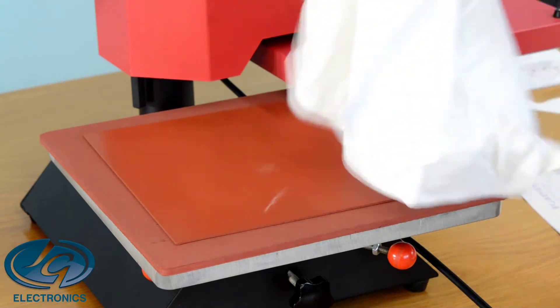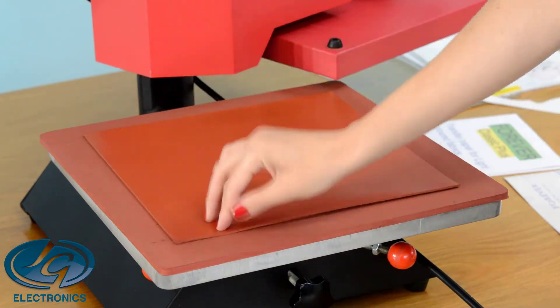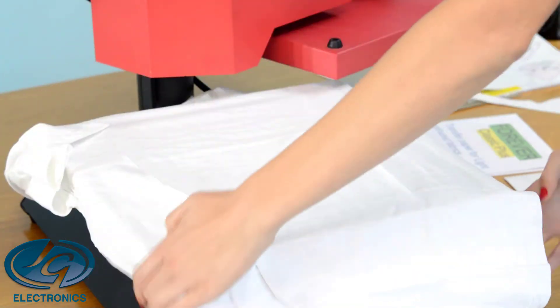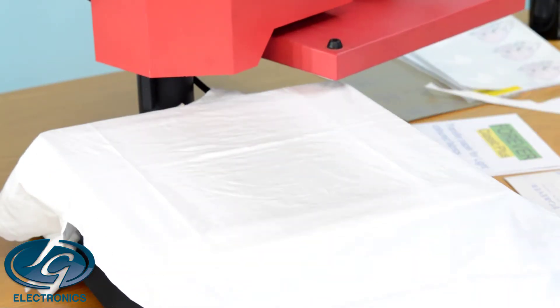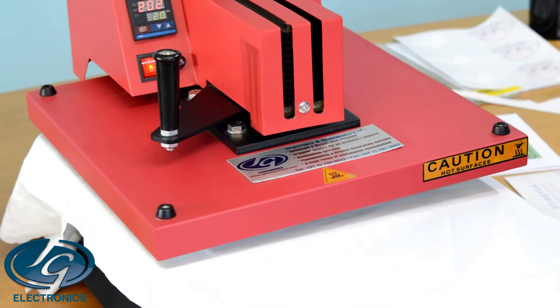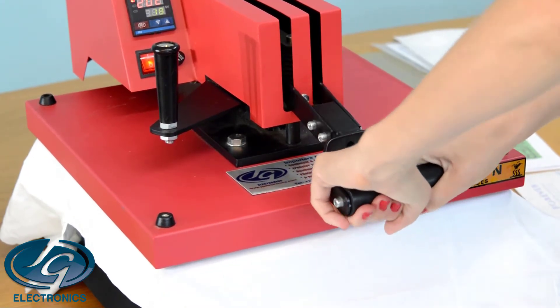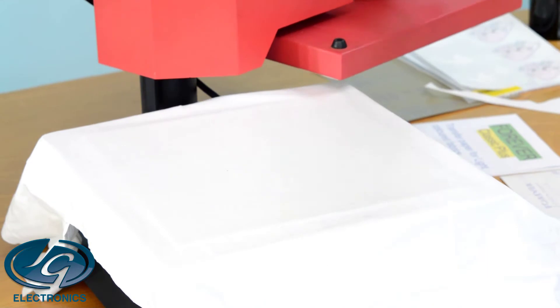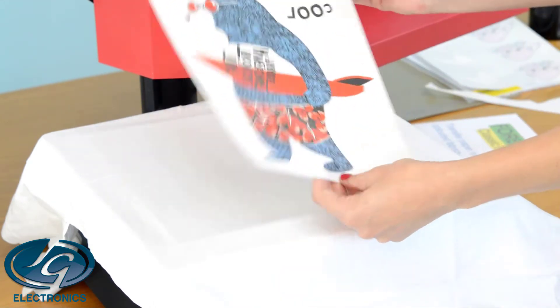You don't have to heat up the base of the press. Use your rubber mat at the bottom. We're going to take out all the wrinkles and moisture by pre-pressing our t-shirt.